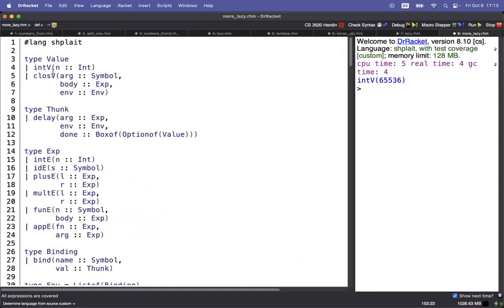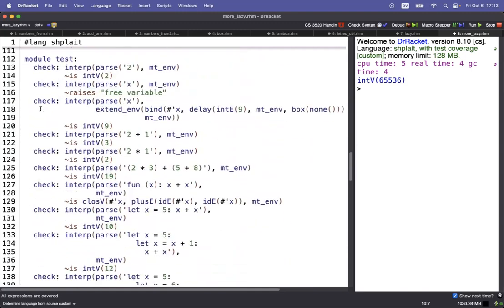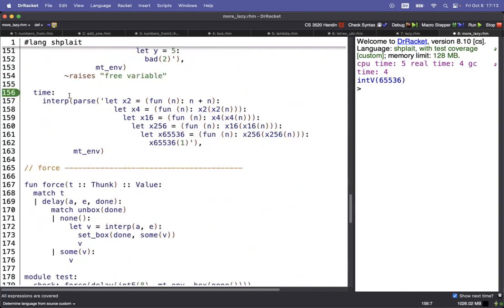We've got that implemented over here in a more lazy interpreter. So thunk now has three fields. Interp is updated accordingly. And if we go back to our big test here, where we've got 65,000 uses, it runs much, much quicker than before.